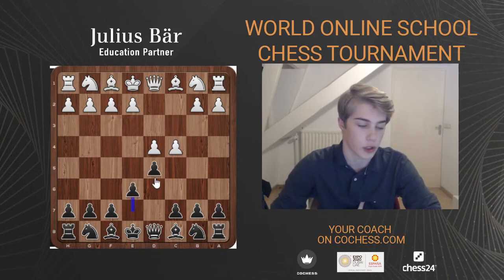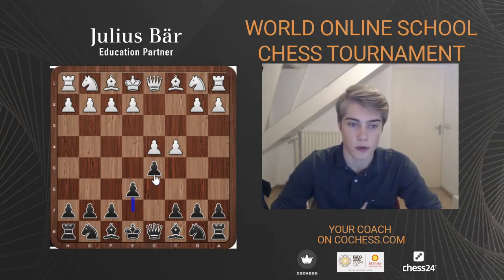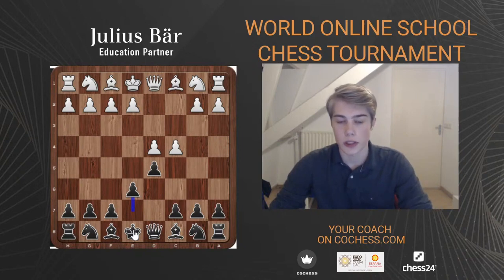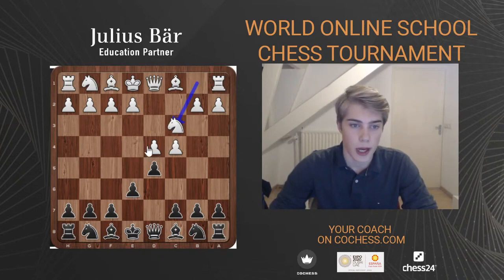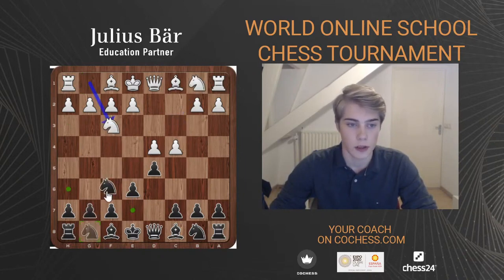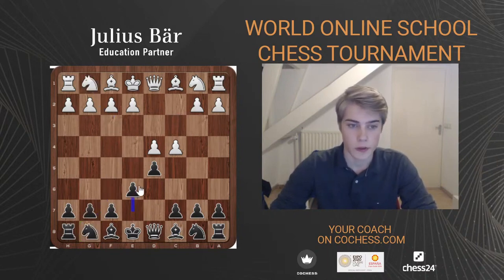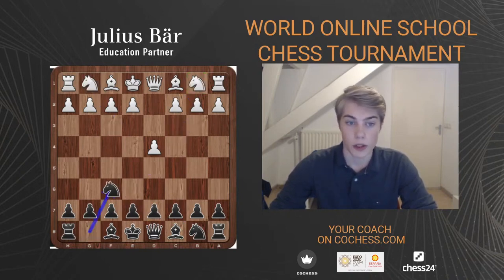In the Queen's Gambit Declined we don't want to give up the center — we want to keep the pawn on d5 and not give up space. Usually White responds with Nc3, because after Nf3 Black is very flexible and can play Nf6. White wants to punish Black for playing d5 and e6 with the move Nc3.